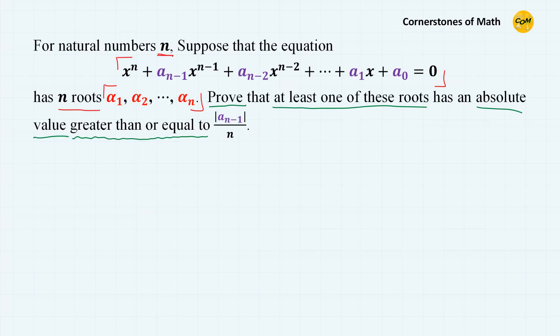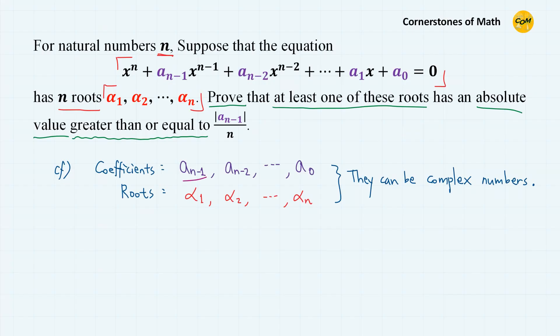So this is our problem to solve. Note that all coefficients and all roots can be complex numbers — they are not just limited to real numbers. If you are not familiar with complex numbers, you may think of this problem as dealing with only real number coefficients and the case where the equation has n real roots. But the same proof applies to complex numbers as well, since complex numbers also have absolute values, just like real numbers.